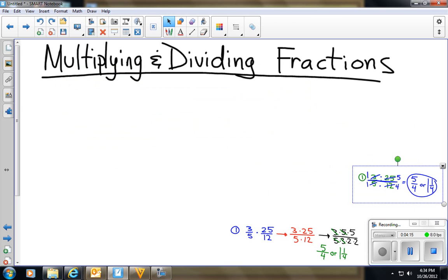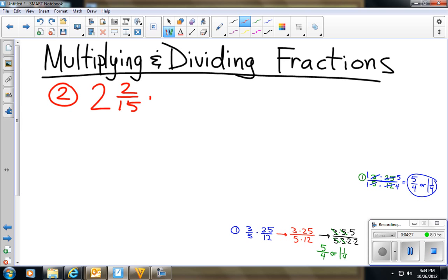All right, so let's look at our next problem. Sometimes you're going to have mixed numbers. So, like, you have 2 and 2/15 times 3 and 3/8. Well, with adding and subtracting, you kept them as mixed numbers. With multiplying and dividing, you need to change them into improper fractions. That is the very first thing you have to do when you're dealing with mixed numbers. You gots to. So we're going to go ahead and we're going to do that right now.